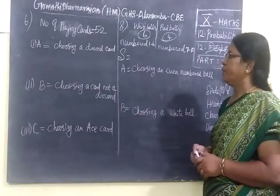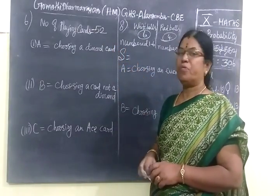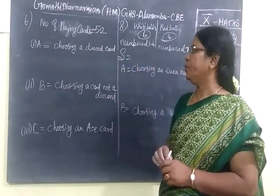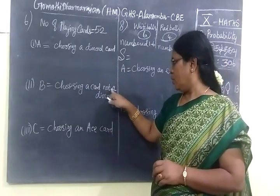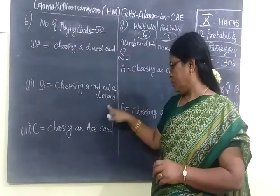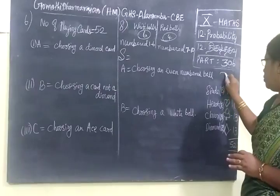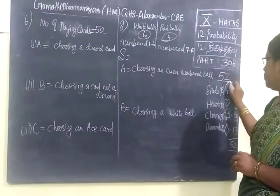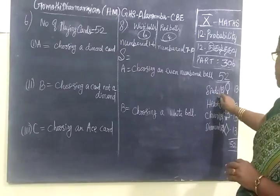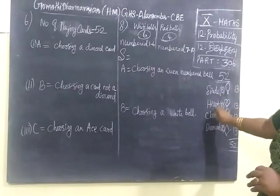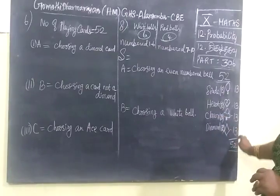Next we see problem 390. In that we are given a number of playing cards. We know there are 52 cards. We are going to choose a diamond card, then a card which is not a diamond card. Out of 52 cards, there are four suits: Spade symbol — 13 cards, Heart symbol — 13 cards, Clover — 13, and Diamond — 13.